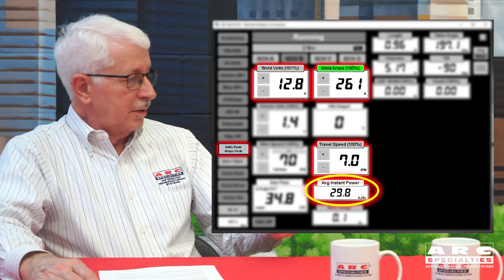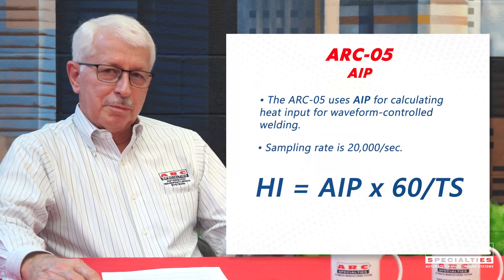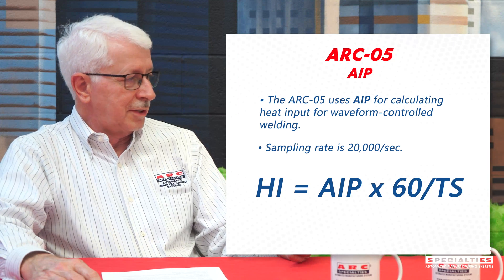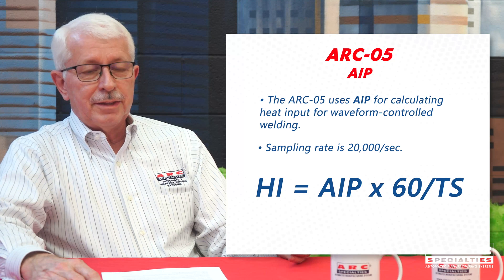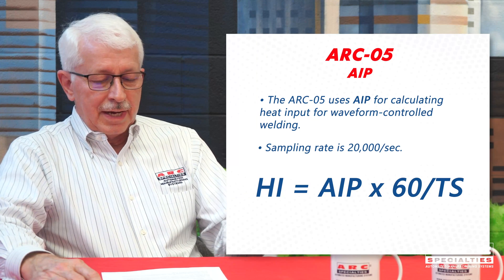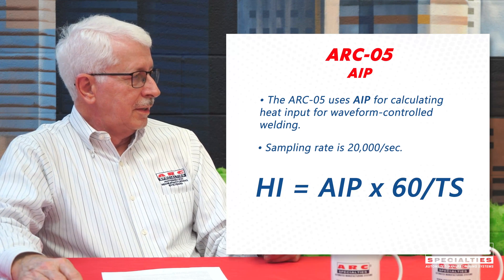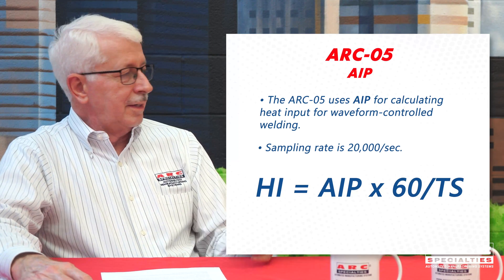People have asked the question: if my customer insists upon having average instantaneous power, can you give that to me? Yes, we can. We've added that into the Arc-5 control. If you hit the heat input button, it will toggle from the conventional heat input to AIP, or average instantaneous power. As Dick mentioned, you have to sample at least 5,000 times a second — in this case, we're actually reading at 20,000 times a second. We're using the formula for average instantaneous power — taking the average of the sum of the products of amps times volts. We know our travel speed, so we know time and distance, and so we can calculate and display average instantaneous power.